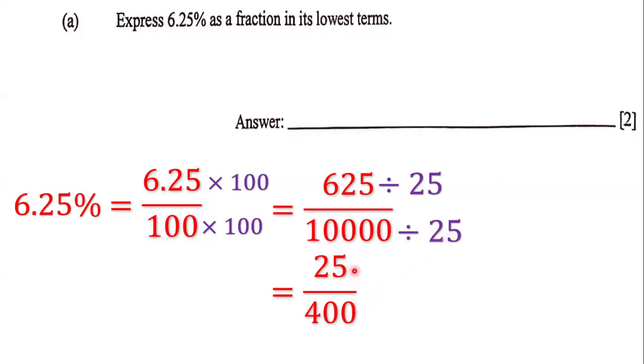So we have 25 over 400, but it's not in simple terms yet because we can simplify it further. What number can go into both 25 and 400 without leaving a remainder? Let's use 25 again. 25 goes into itself one time and 25 goes into 400 sixteen times.